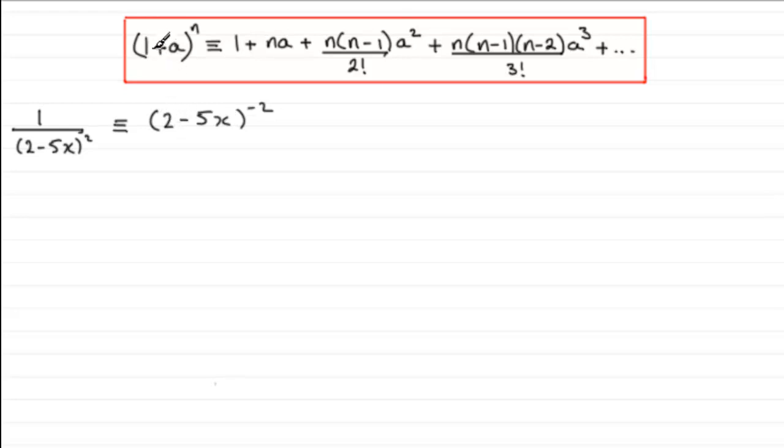The problem is though I've got this 2 in here and I need a 1 here. So to get around that problem what we do is we pull out whatever number you've got here, in this case 2, and we will have a bracket where we put a 1 there and then we put minus 5x over 2. And so obviously we've now got if we expand this 2 minus 5x, but we realize it's now all to the power minus 2 so we've got to put that all to the power minus 2.